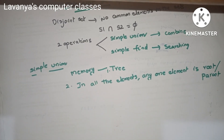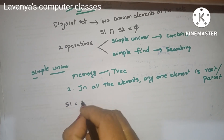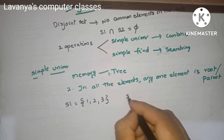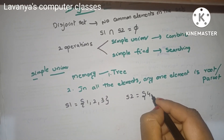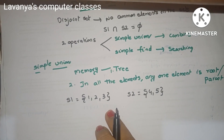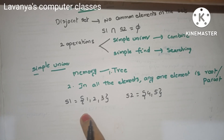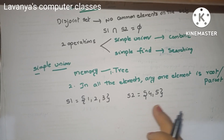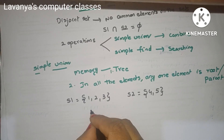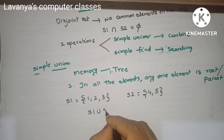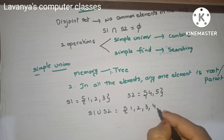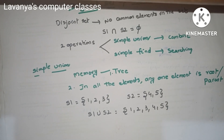For example, we represent two sets: S1 contains elements 1, 2, 3 and S2 contains elements 4, 5. We check whether these two are disjoint sets. Since S1 and S2 have totally different elements, they are disjoint sets. Then S1 union S2 combines all elements: 1, 2, 3, 4, 5. This is the simple union.